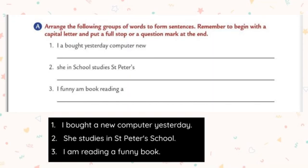The fifth one: 'Is Mr. Tendulkar walks, takes for dog.' We arrange it as: 'Mr. Tendulkar takes his dog for walks.' First, write the name of the person — Mr. Tendulkar. The verb in the sentence is 'takes.' Put a full stop at the end of the statement.